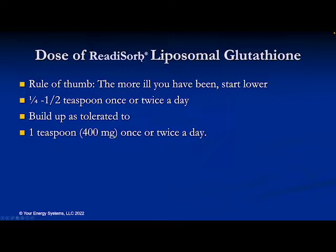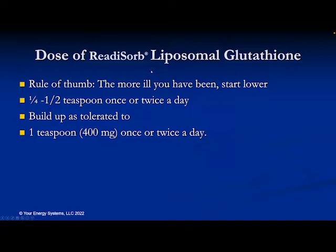One question that almost always comes up is what dose of redisorb liposomal glutathione might be useful. My personal rule of thumb: the more ill you have been, the slower you should go. Start with a quarter teaspoon once a day, work up to twice a day, then progress up to one and a half teaspoon once or twice a day, up to one teaspoon twice a day. Go slow because when glutathione is low you may have accumulated toxins, and going slowly allows your system to detoxify without a die-off type reaction.